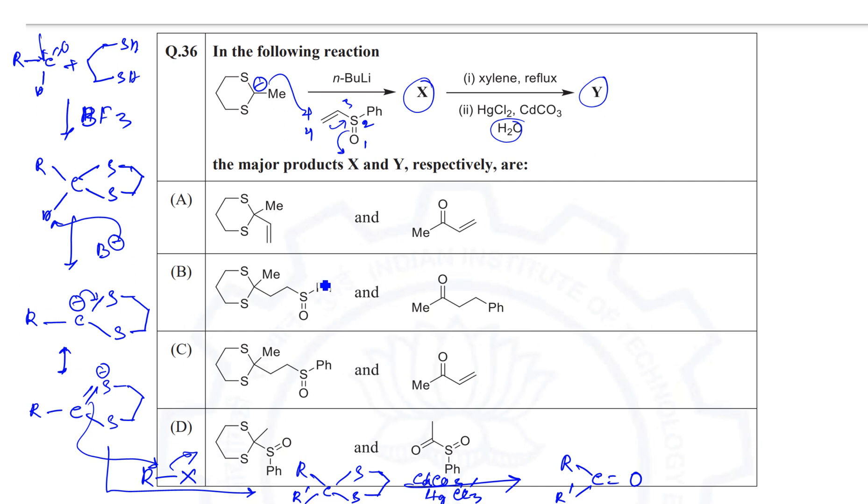Now when it is treated with xylene in refluxing condition, this is a sulfoxide and it has one beta-hydrogen atom. In terms of the heat, this beta-hydrogen atom will be eliminated. Pyrolytic syn elimination reaction will take place through a cyclic transition state. It will undergo pyrolytic syn elimination and here an elimination reaction will take place and the corresponding alkene will be formed. So this will be the product.